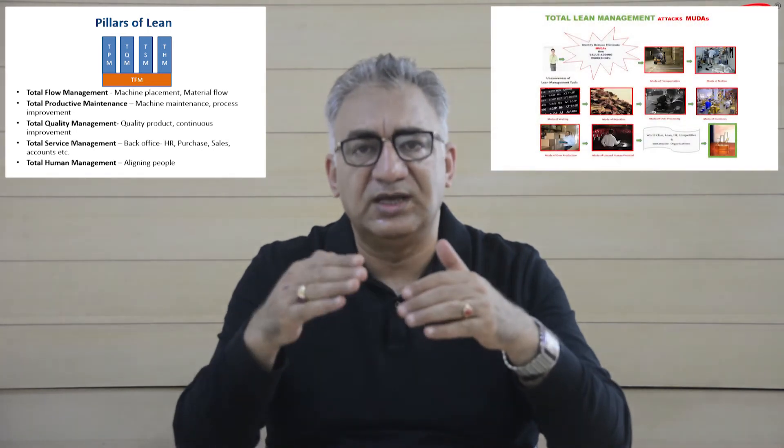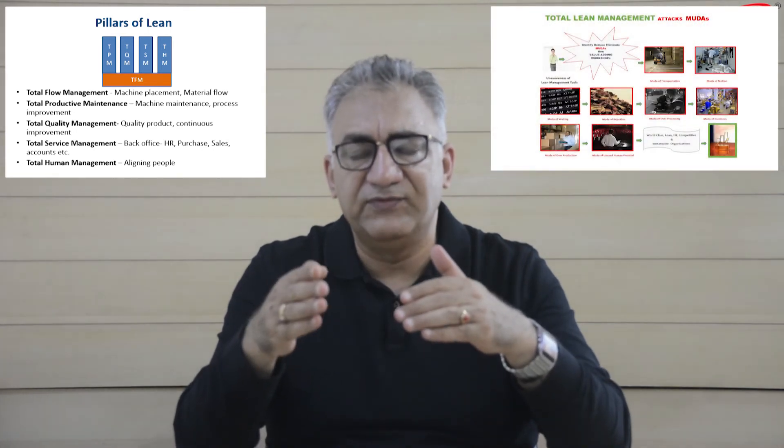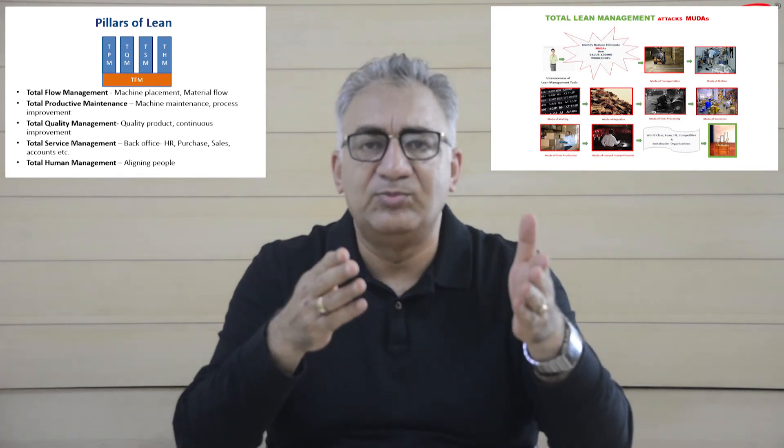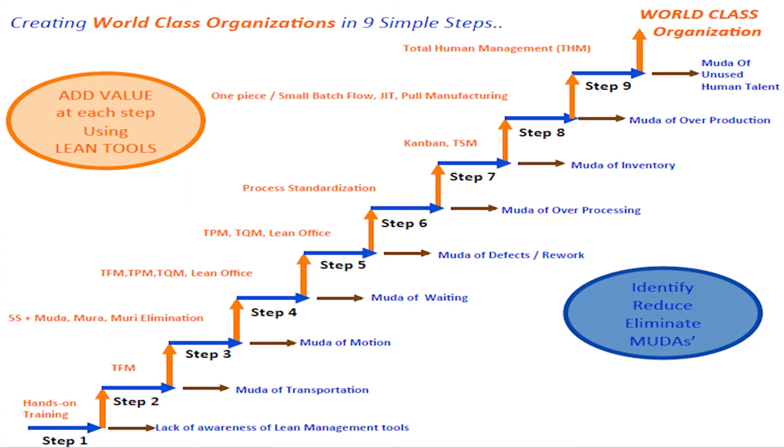Once processes are designed, it is very important that the equipment and machines being used are healthy and perform as per requirement. That is taken care of under the second pillar, Total Productive Maintenance. When you maintain, you get more productivity. The tools under TPM include autonomous maintenance and preventive maintenance.